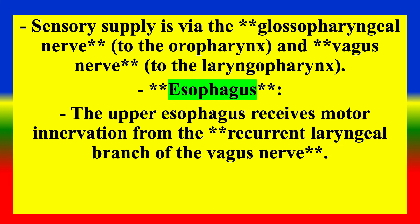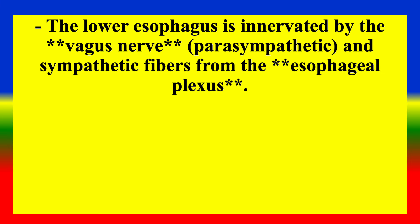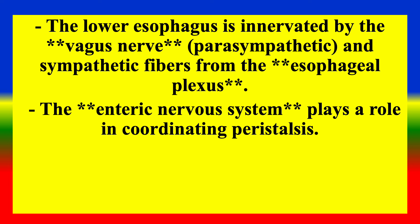Nerve Supply — Esophagus: The upper esophagus receives motor innervation from the recurrent laryngeal branch of the vagus nerve. The lower esophagus is innervated by the vagus nerve, with parasympathetic and sympathetic fibers from the esophageal plexus. The enteric nervous system plays a role in coordinating peristalsis.